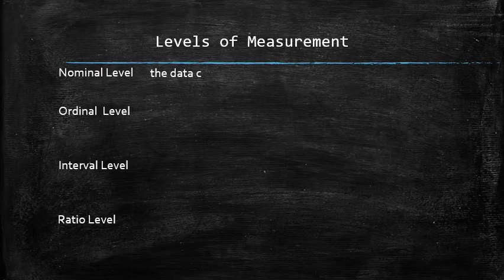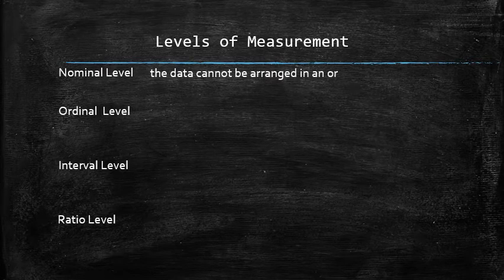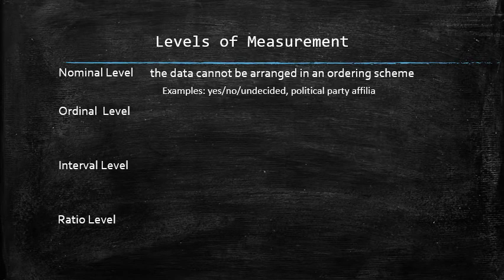The nominal level is when the data cannot be arranged in any ordering scheme. For example, the answers yes, no, undecided, or political party affiliation.